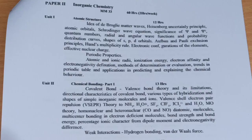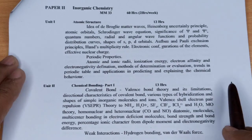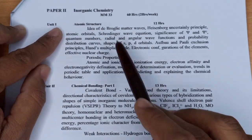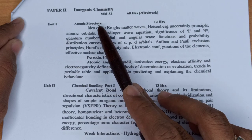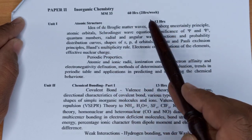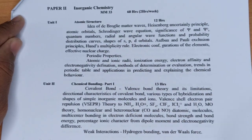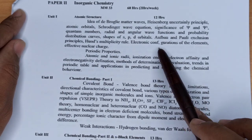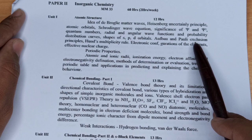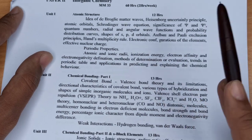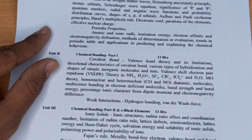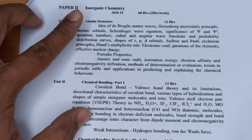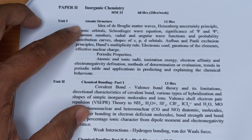चलिए अब Inorganic Chemistry के बारे में देख लेते हैं। Inorganic Chemistry में पहली unit है Atomic Structure। इसमें periodic table, orbitals, Pauli Exclusion Principle, Hund's Multiplicity Rule और atomic structure से related सारा कुछ दिया है।